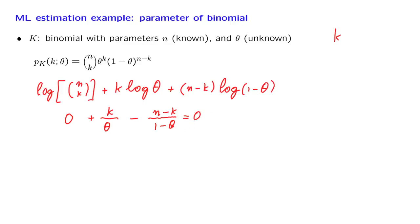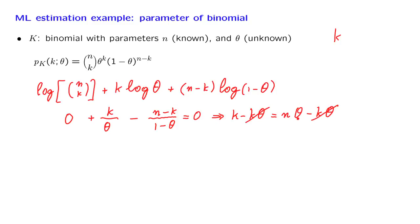At the maximum, the derivative has to equal 0, giving us an equation for theta. Moving one term to the right-hand side and cross-multiplying with the denominators, we obtain the relation that k minus k·theta equals n·theta minus k·theta. The k·theta terms cancel, leaving us with a simplified expression.